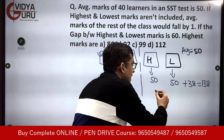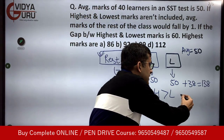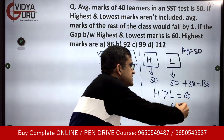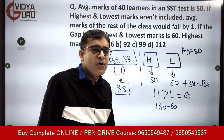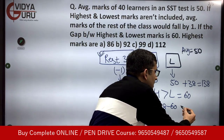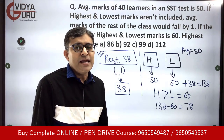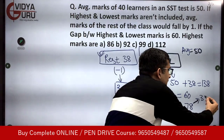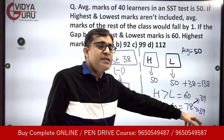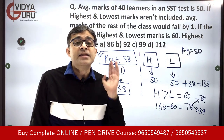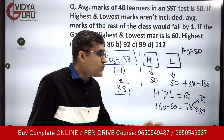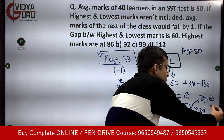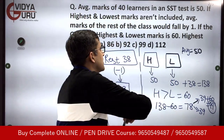The highest is greater than the lowest by 60. If I subtract this 60 from 138, I am left with 78. If their scores were equal, they would each be 39. But the highest is greater than the lowest by 60, so the highest score will be 39 + 60 = 99. The answer is 99.